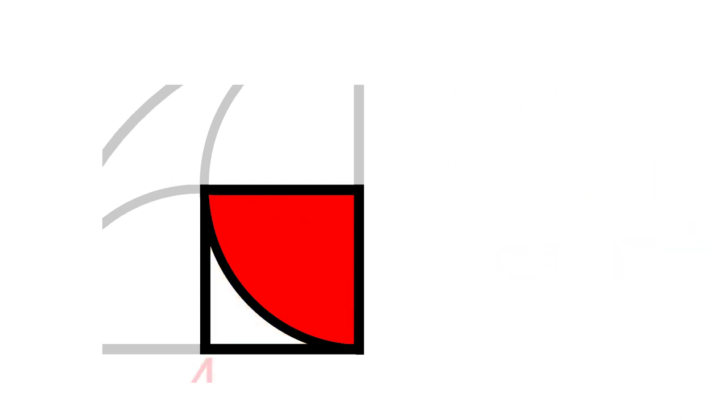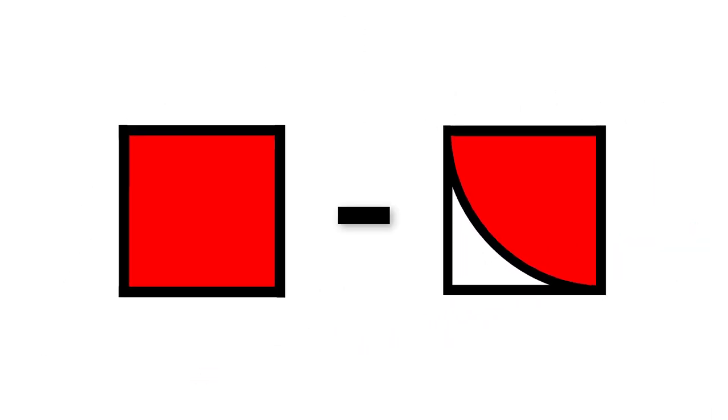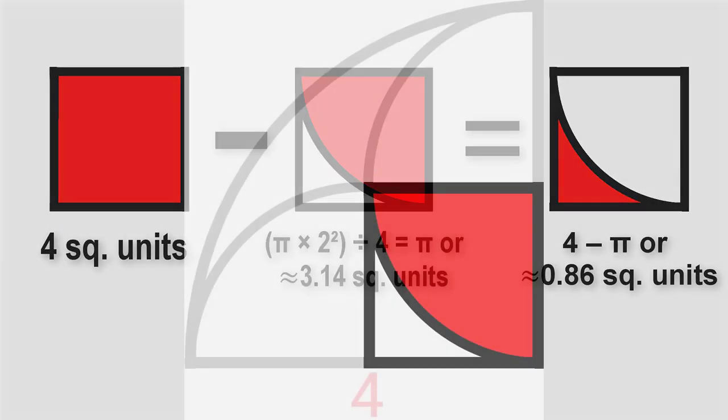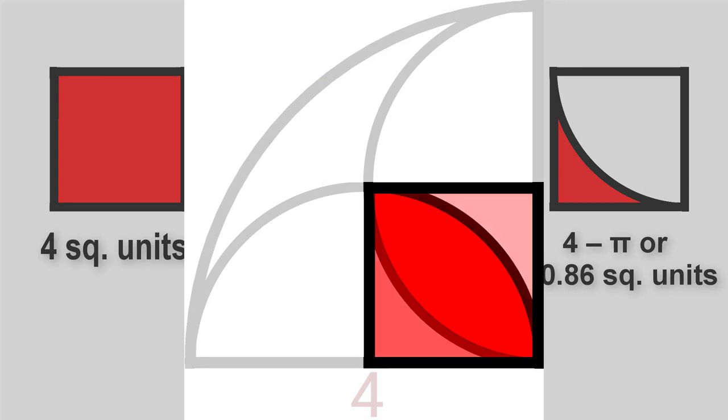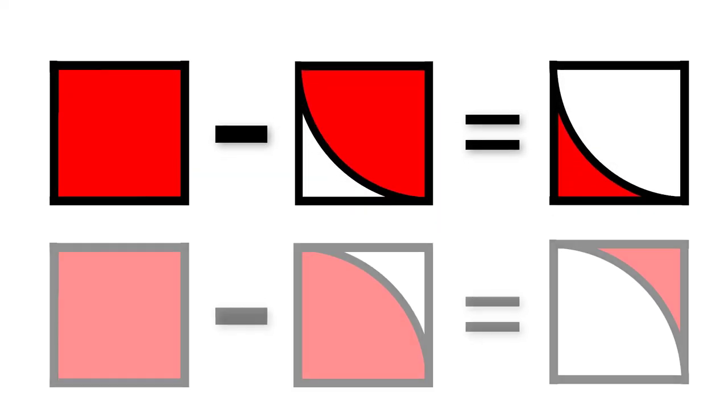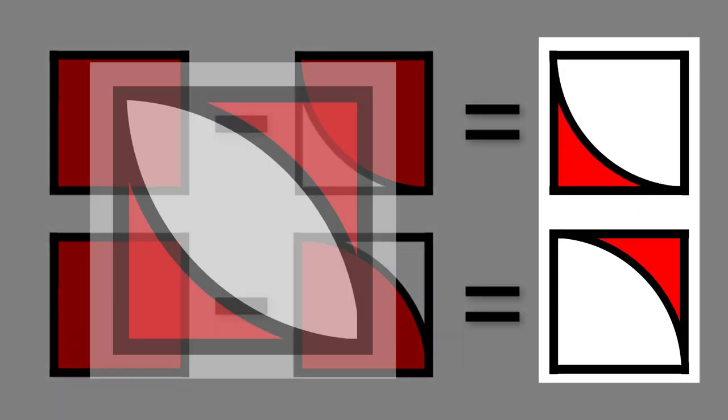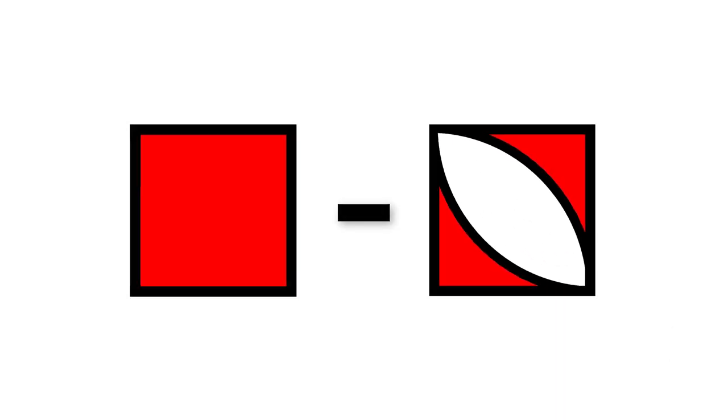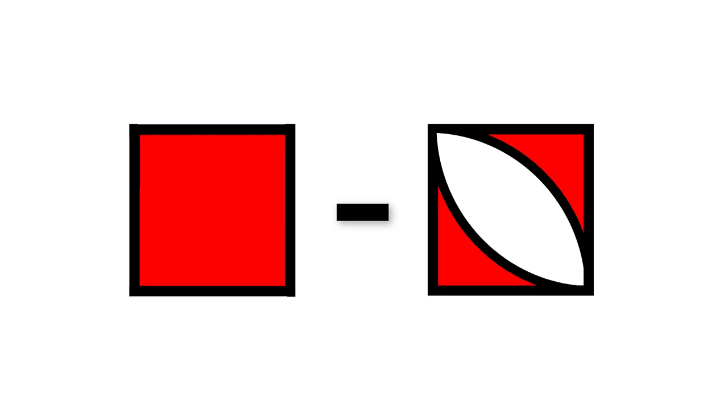We can then find the area of this quarter circle and subtract its area from the entire square. Since there are two identical quarter circles, we do this calculation again. We add their differences and subtract it from the area of the entire square, and this will lead us to the area of the overlap.